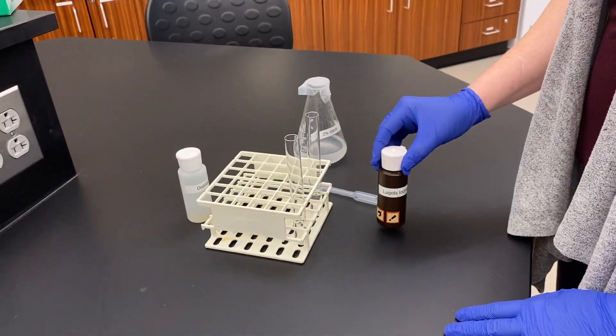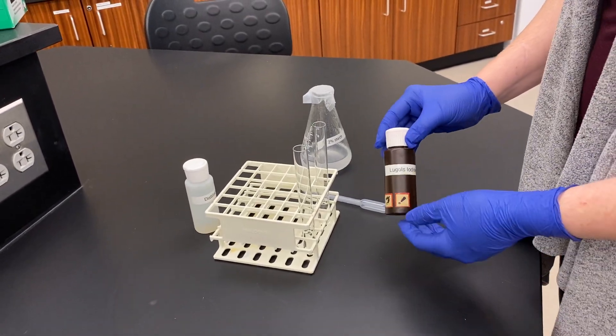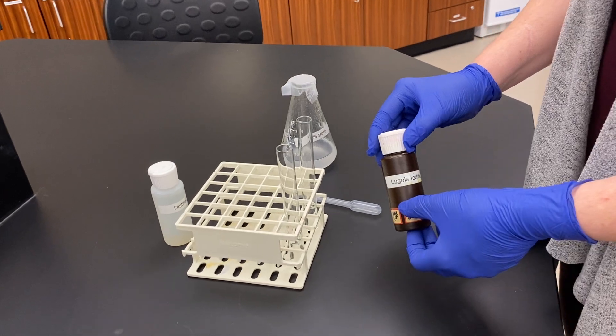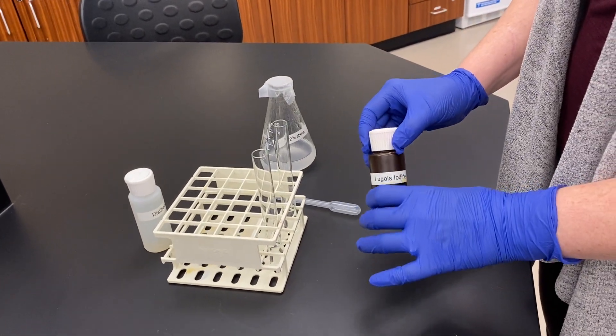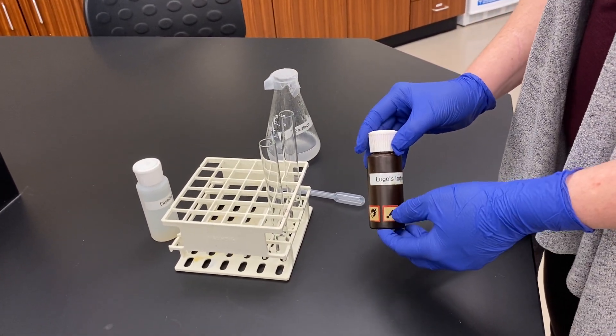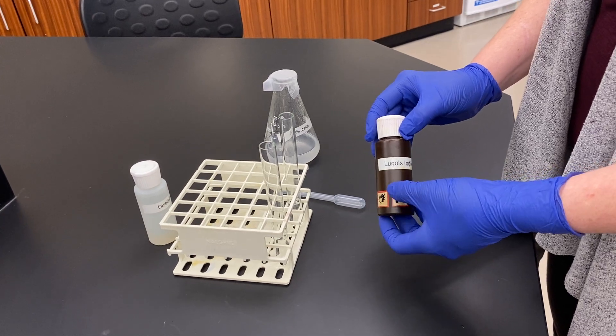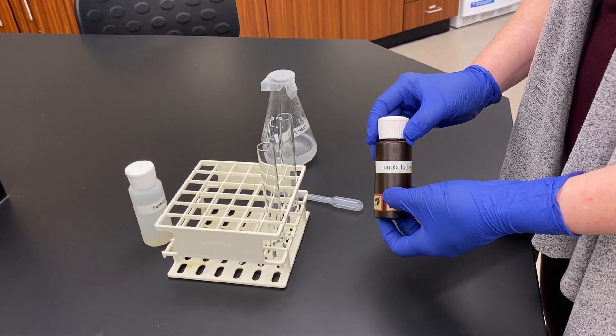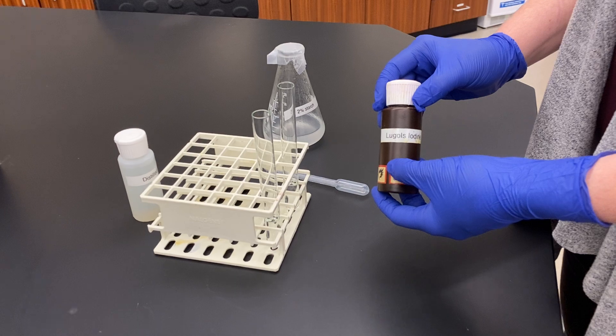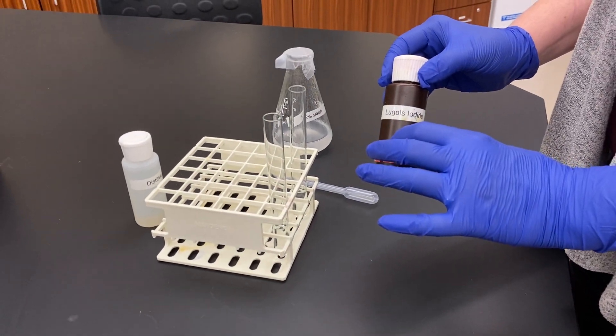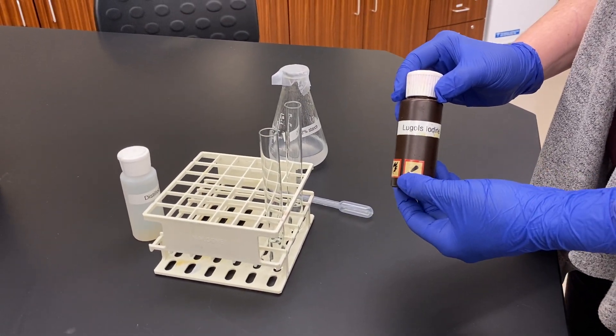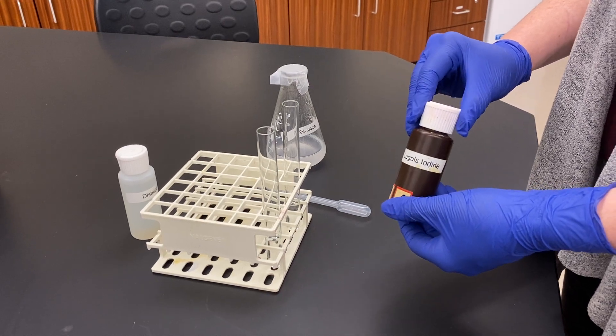In this test we're going to examine the presence of starch. To do that we're going to use Lugol's iodide. This iodide is going to react if starch is present. It's going to bind with starch and result in a very distinct color change from the yellow-brown solution that it currently is to a dark blue-black solution.